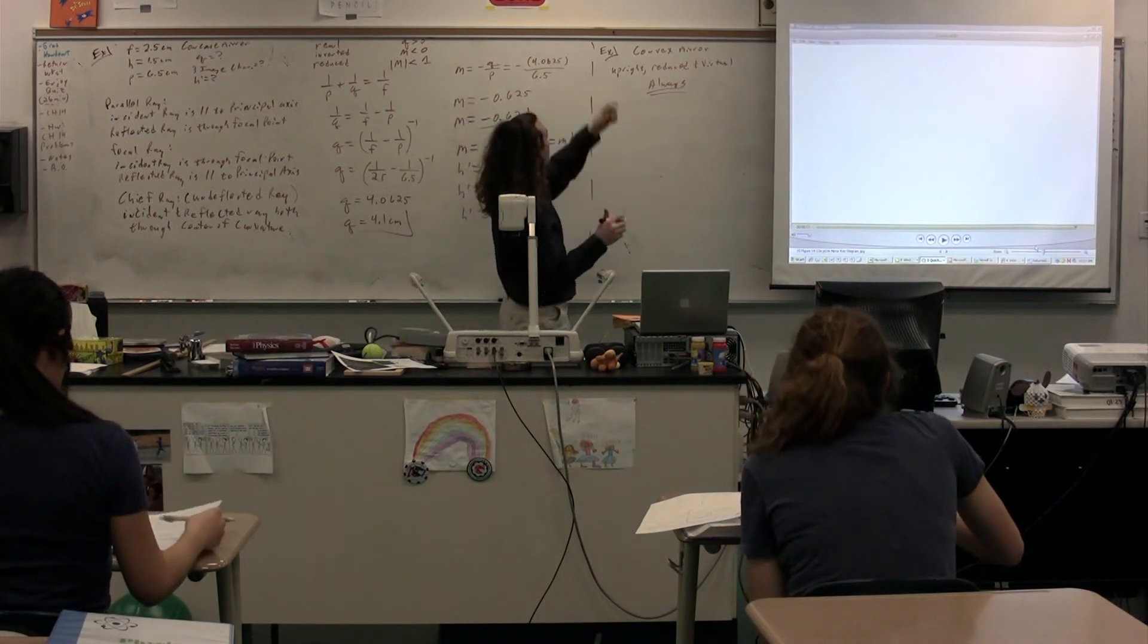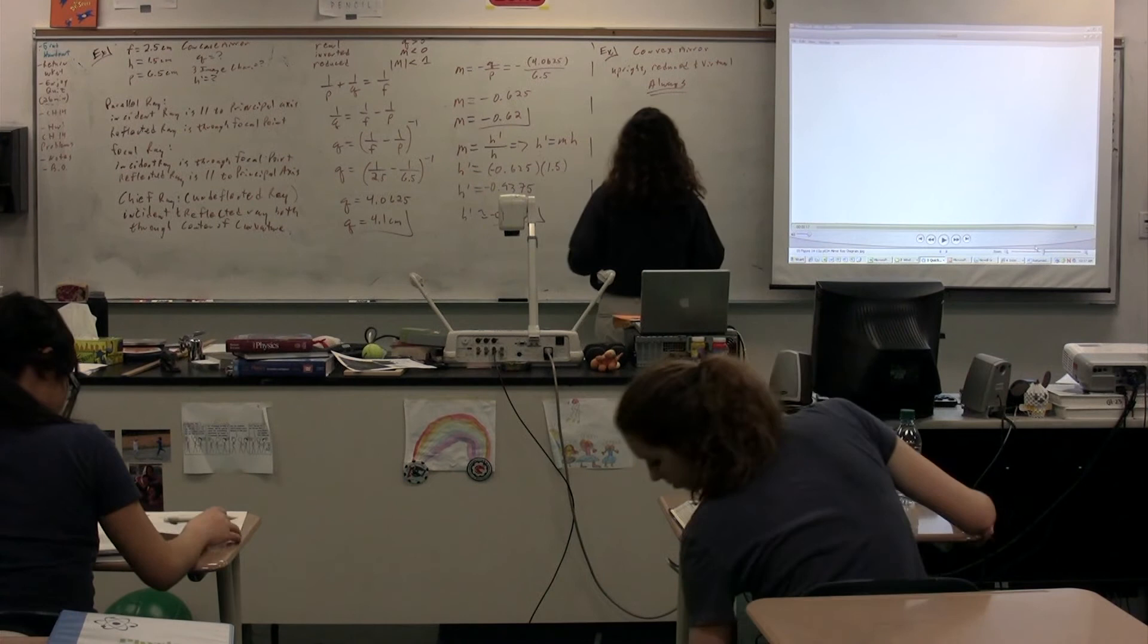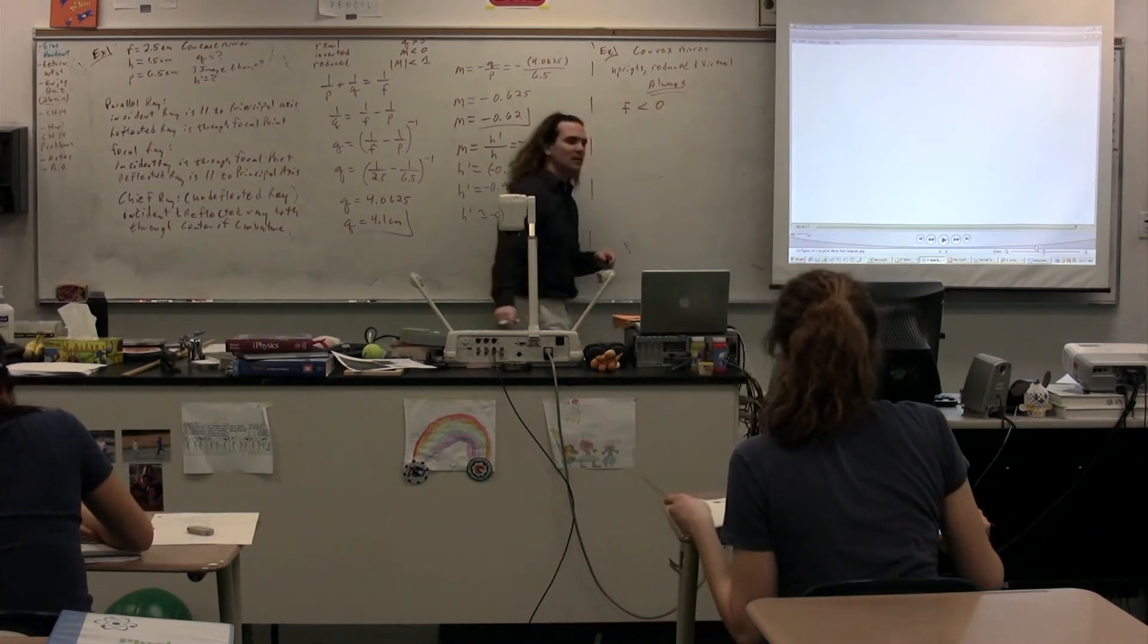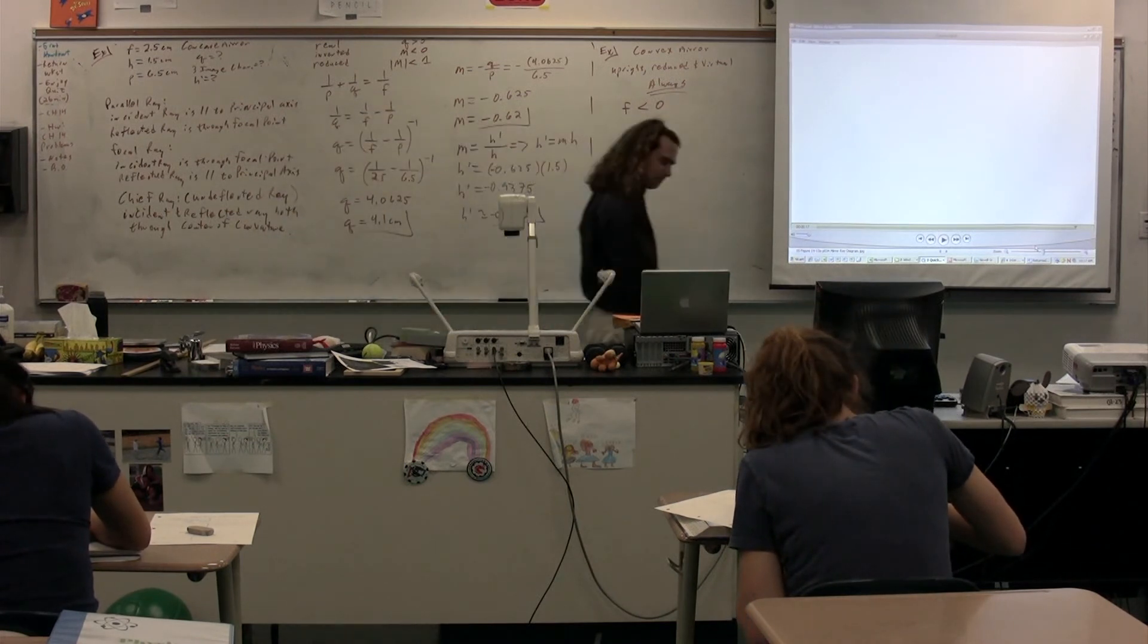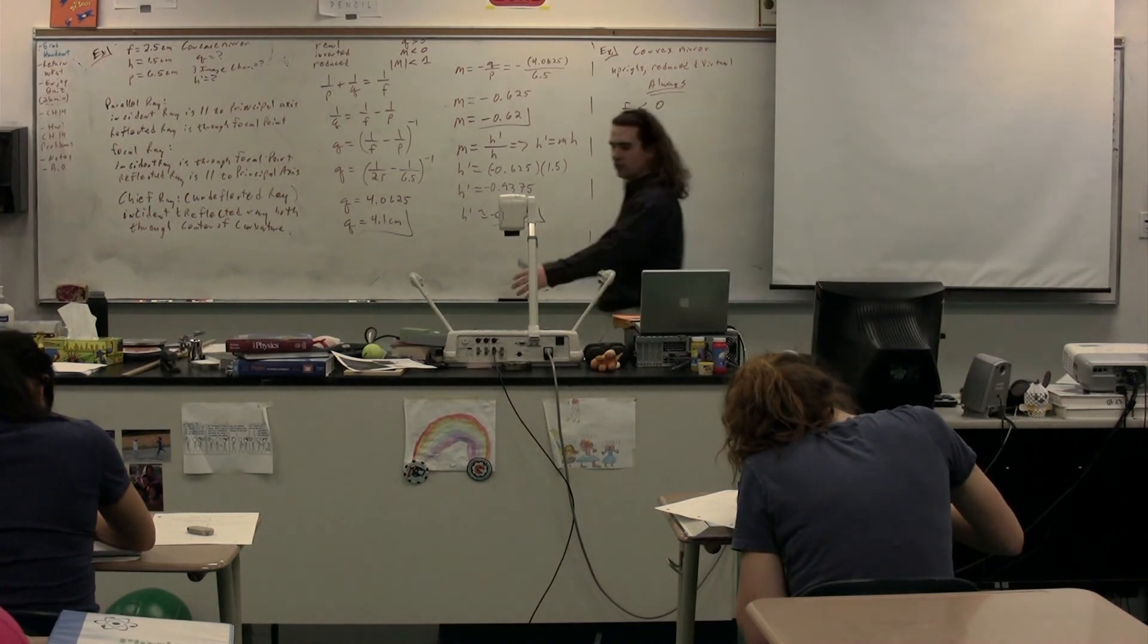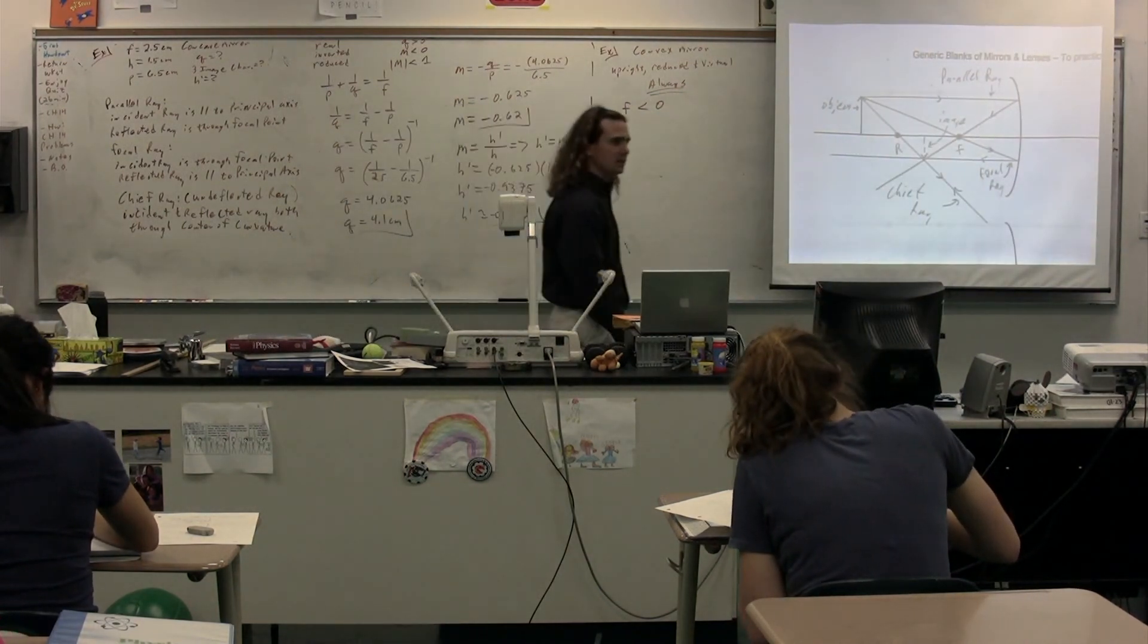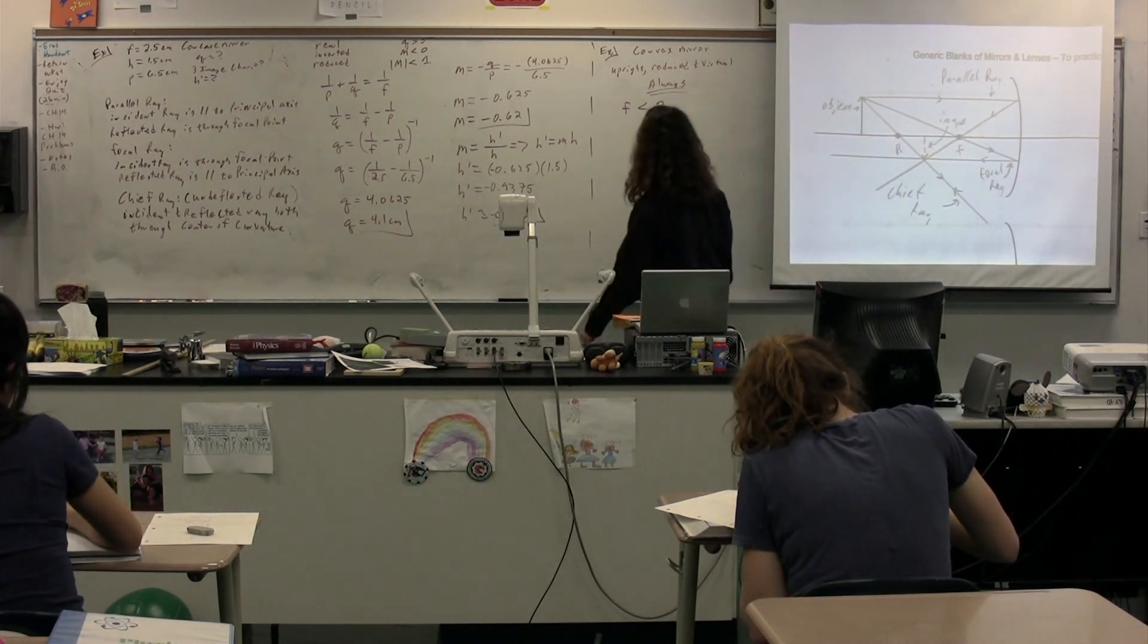Okay, so, one other thing to note about the focal length of a convex mirror is always less than zero. If you recall, when we talked about the convex mirror, I showed you the focal length was on the other side. That's because, and therefore, the focal length is actually always less than zero.